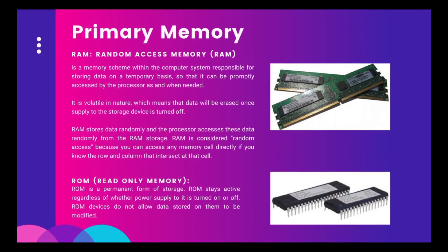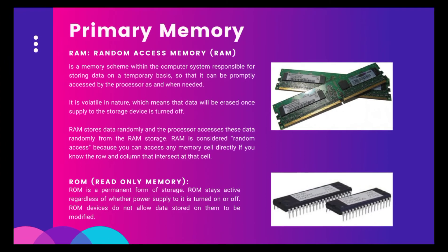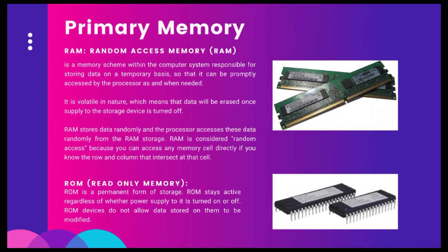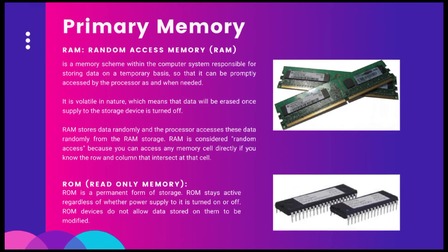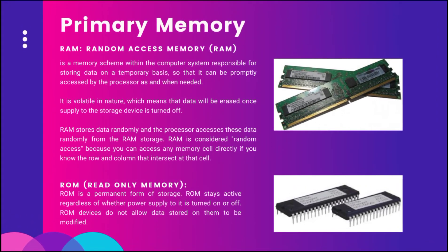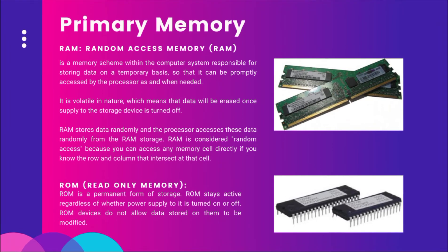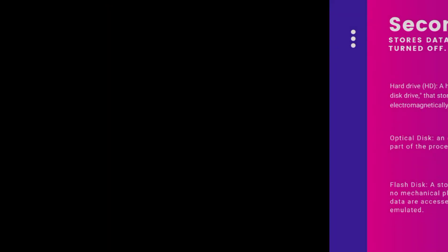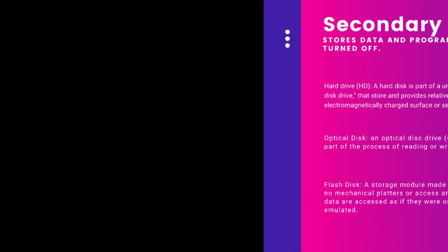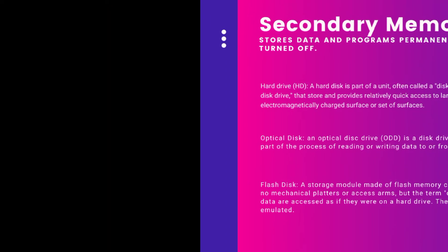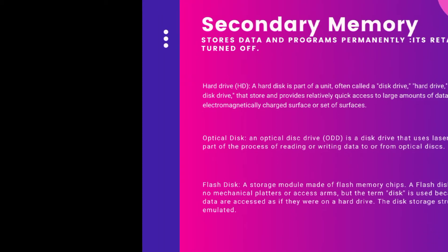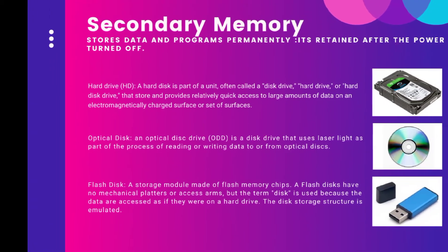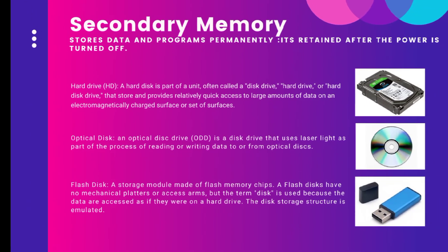The primary memory of a computer includes Random Access Memory (RAM) and Read Only Memory (ROM). The secondary memory involves the hard drive (HD), the optical disk, and the flash disk.